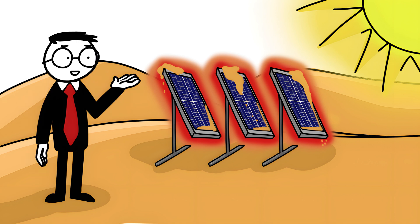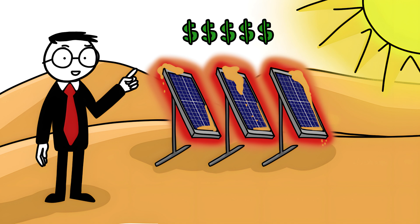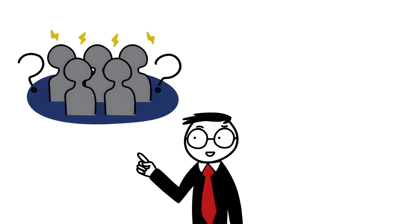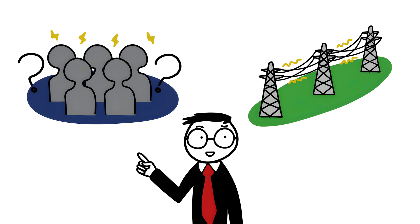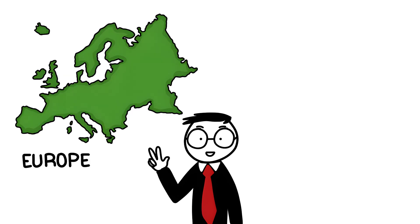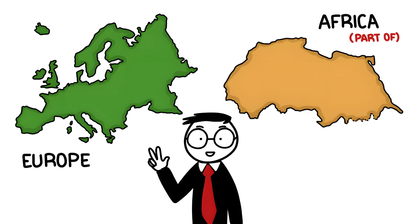However, it is also important to clarify who gets how much electricity, and how to build a power grid that transports the energy efficiently to consumer regions. In theory, both Europe and parts of Africa could benefit from the electricity generated.